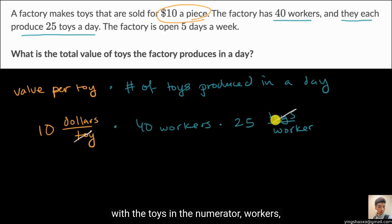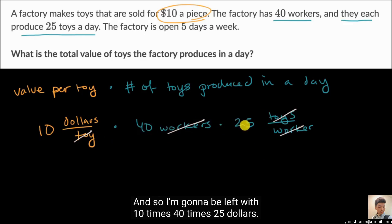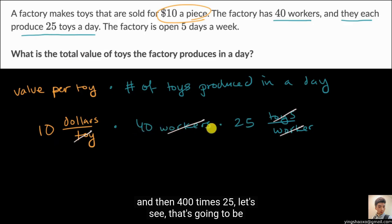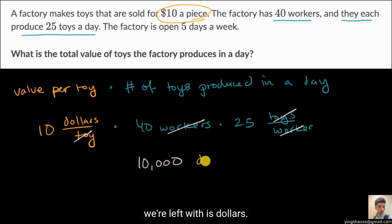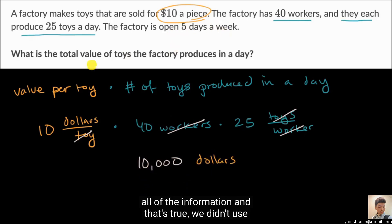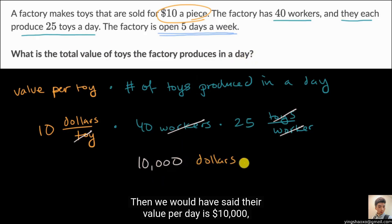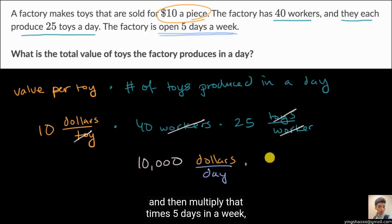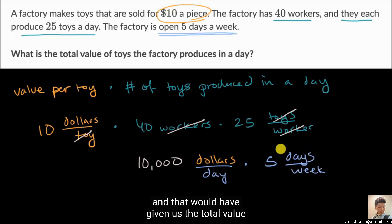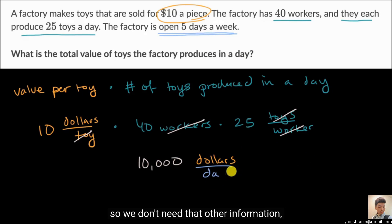A toy in the denominator cancels out with the toys in the numerator. Workers, when you multiply, this would be in the numerator and this is in the denominator, so workers cancel out. And so I'm going to be left with 10 times 40 times 25 dollars. So this is going to be equal to: 10 times 40 is 400, and then 400 times 25 — that's 4 times 25 times 100, so that's 100 times 100, which is 10,000 dollars. Now you might be saying, we didn't use all of the information — we didn't use the fact that the factory is open five days a week. We didn't need that. That would have been useful if they asked for the total value in a week. Then we would multiply $10,000 per day times five days in a week. But that's not what they're asking for, so we don't need that information — it was extra information, probably to distract you.